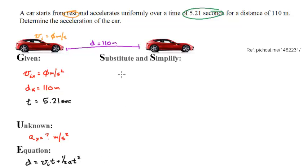In this case, I know displacement is 110, equals velocity initial which is 0, and I know what time is, 5.21, plus I'm going to put this acceleration which I don't know times 5.21 squared, that's all over 2.